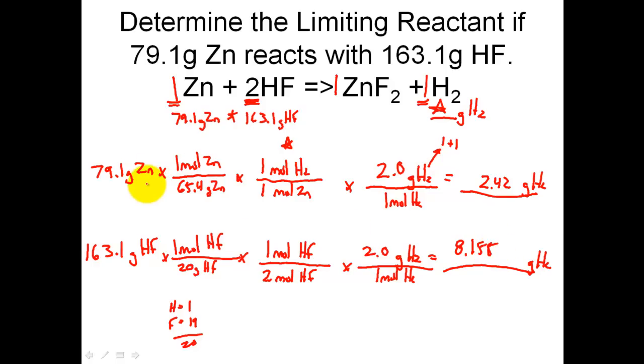So here's the thing. Using stoichiometry, we can say that if I have 79.1 grams of zinc, I should be able to produce at a maximum 2.42 grams of H2. Likewise, if I have 163.1 grams of HF, I can produce a maximum of 8.155 grams of H2. And so it's kind of clear that this right here is a lower number. I can only produce 2.42 grams of H2. The second that's all produced, I run out of zinc.